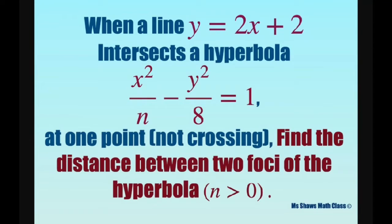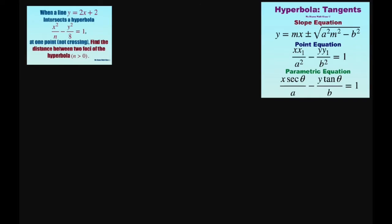Hi everyone. When a line y equals 2x plus 2 intersects a hyperbola x squared divided by n minus y squared divided by 8 equals 1 at one point and it's not crossing, we're going to find the distance between the two foci of the hyperbola. So basically we have to find the foci first and then we just find the distance.